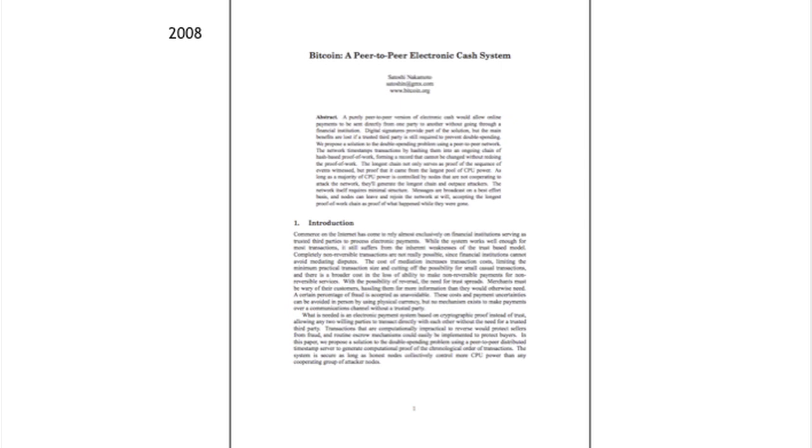Bitcoin began in 2008 with the release of a white paper called 'Bitcoin: A Peer-to-Peer Electronic Cash System,' authored by Satoshi Nakamoto. This paper, which you can still get online easily, is the initial description of what Bitcoin is, basically how it works, and what the philosophy behind its design is. It's still a good thing to read if you want a quick idea of how the technical design of Bitcoin and its initial philosophy were specified.